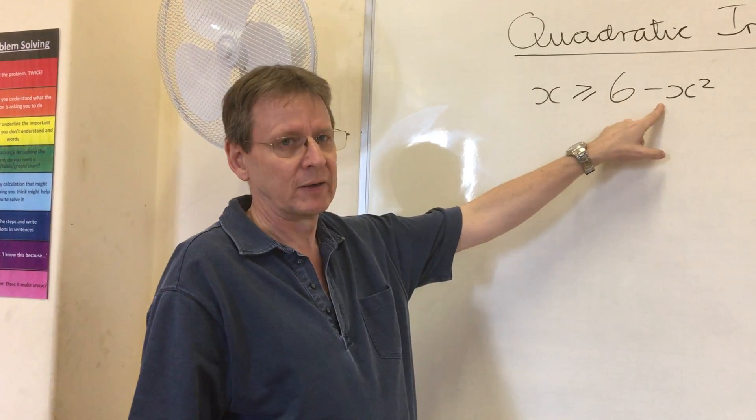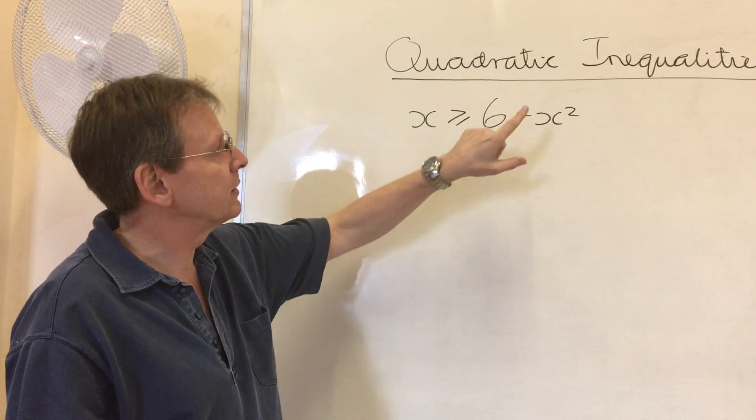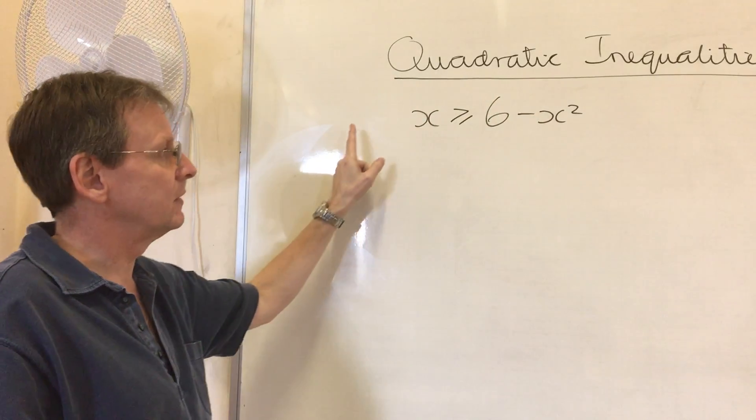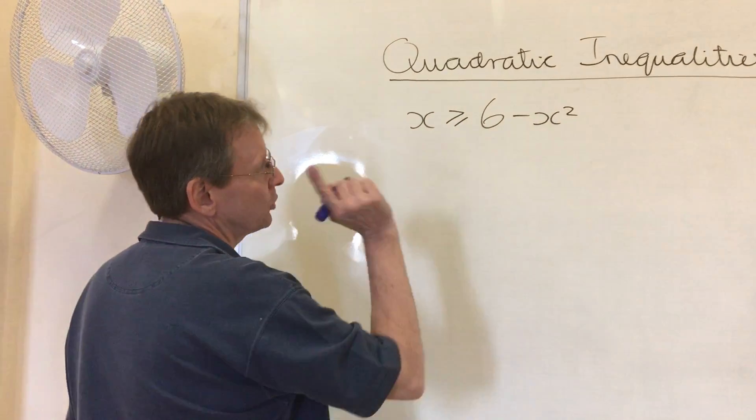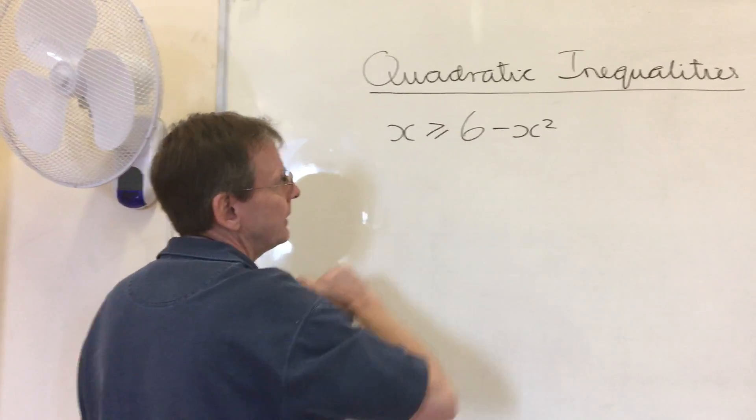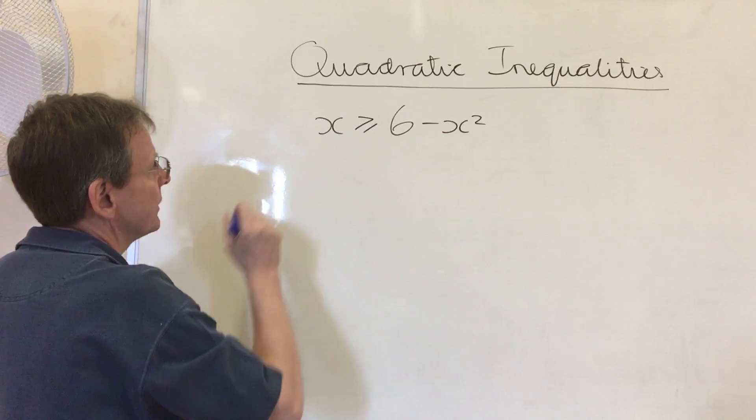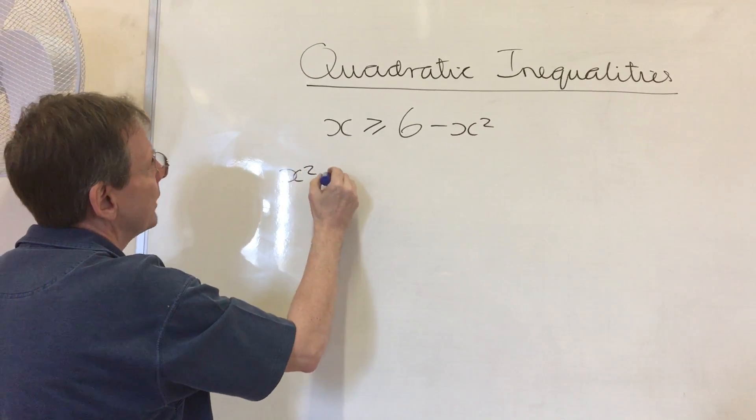So I don't want the x squared on that side. First of all, I'm going to move these two terms over this side. If I do two things in one go, if I add the x squared and subtract the six, I would get this.